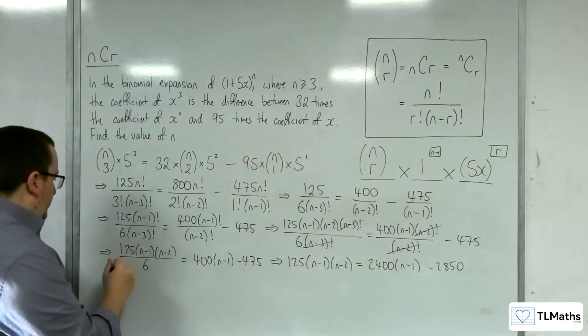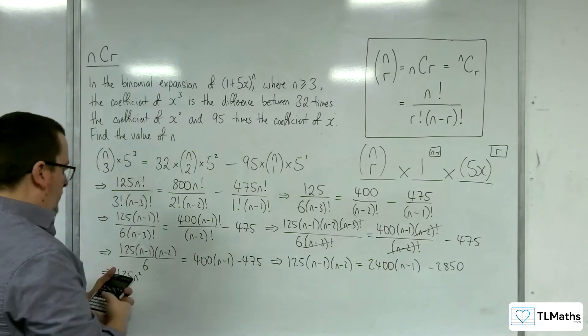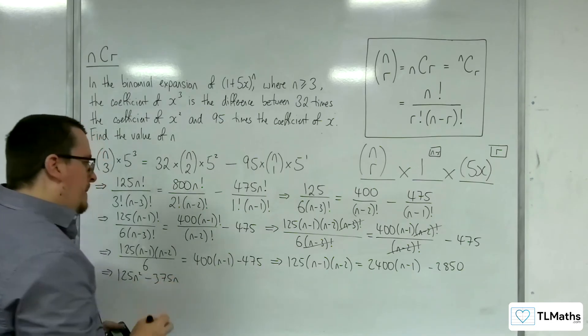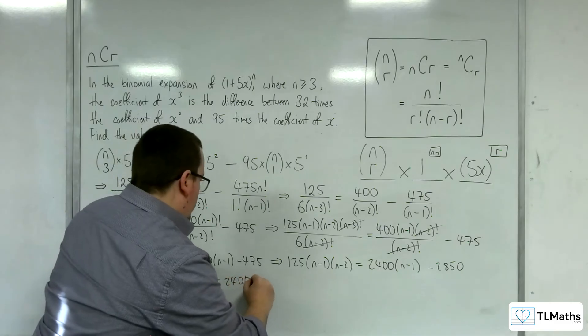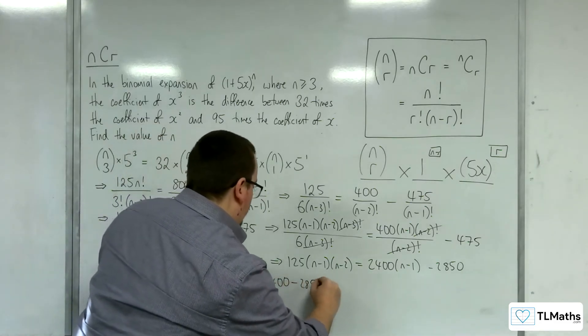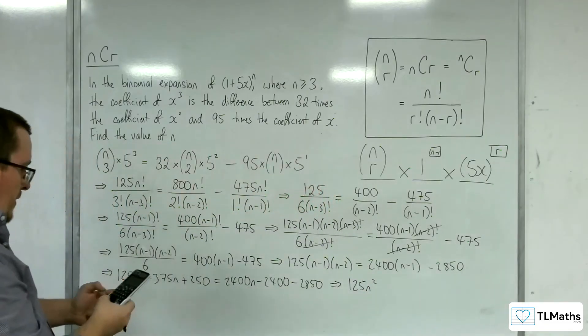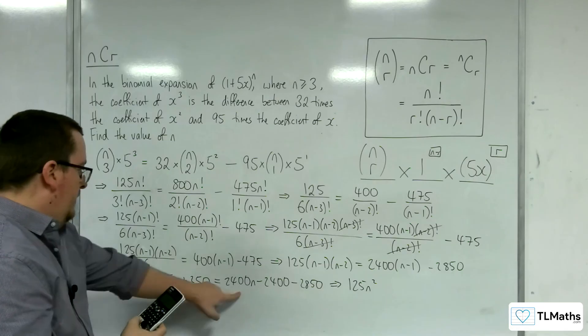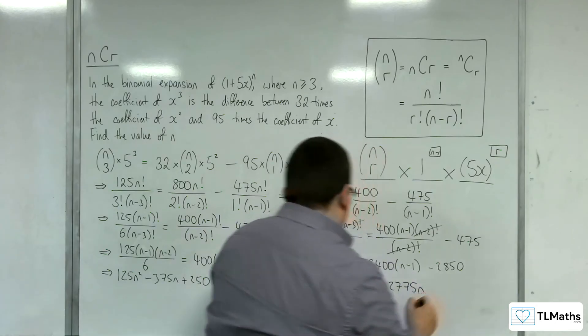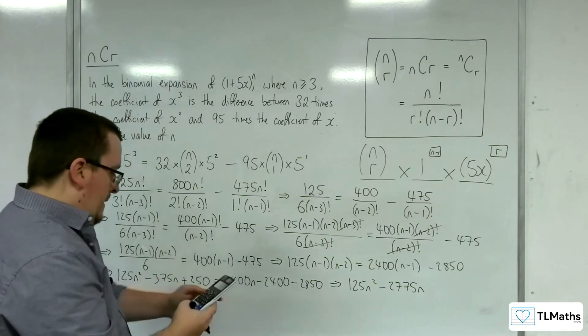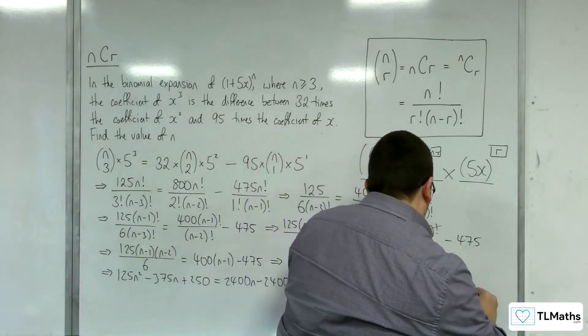Now I want to expand this out, so we're going to get 125 n squared, then we've got 3 lots of 125, so 375, so take away 375 n, then 2 lots of 125 is 250. We've got 2,400, take away 2,850. So that's 125 n squared, we've got the minus 375 n, take away 2,400 n, is minus 2,775 n, we've got the 250, add the 2,400, add the 2,850, gets us 5,550 equals 0.